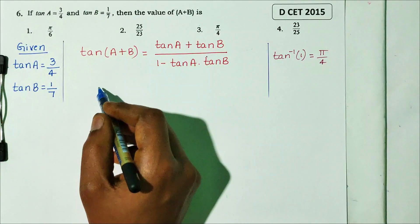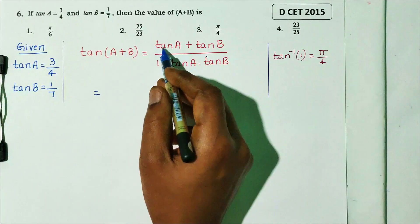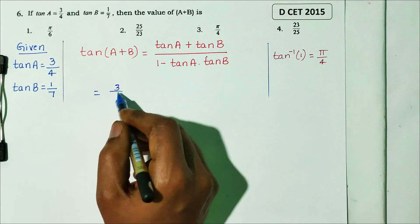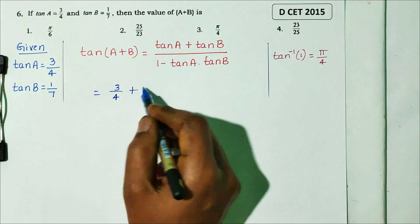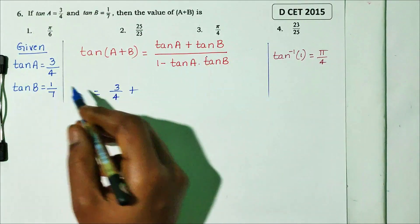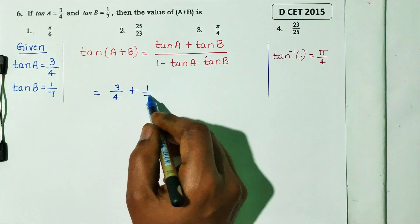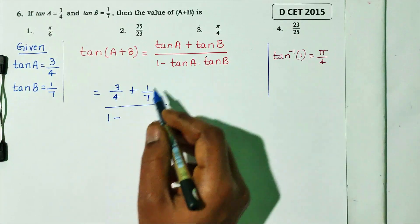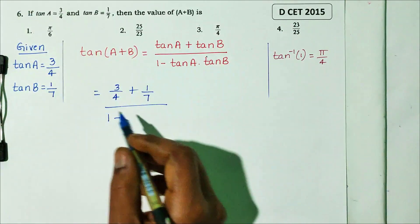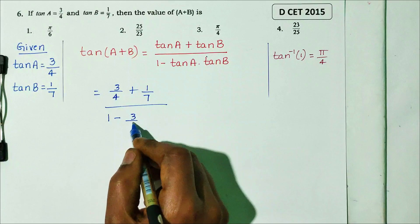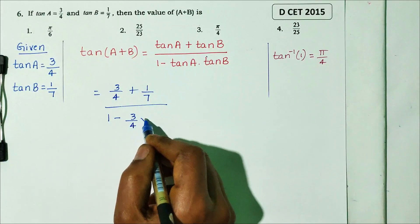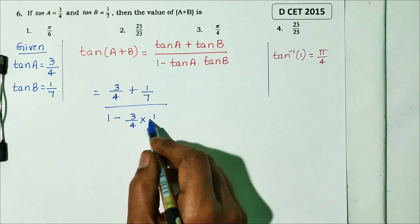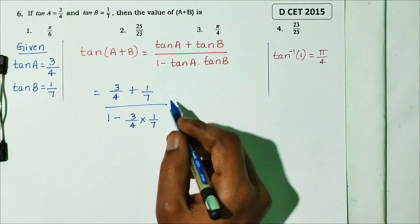So tan A is 3 by 4, plus tan B is 1 by 7, all divided by 1 minus tan A which is 3 by 4, into tan B which is 1 by 7.